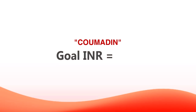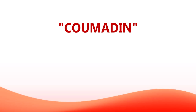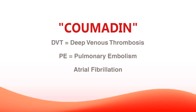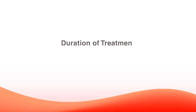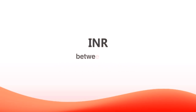When somebody is on Coumadin, the goal INR is between 2 and 3, and this is by far the most common goal INR. People can be on Coumadin for a variety of reasons — for DVTs (deep venous thrombosis), for a PE (pulmonary embolism), or because they have AFib (atrial fibrillation). The duration of time they need to be on Coumadin varies anywhere from maybe 3 months all the way to a lifetime, depending on their condition. Most of the time, the goal INR is between 2 and 3.